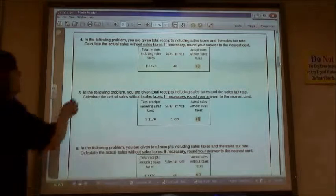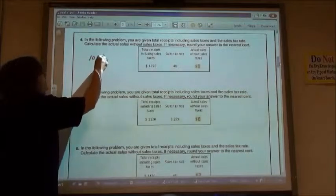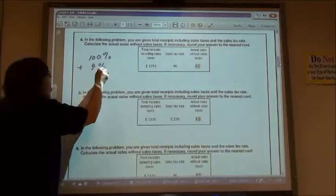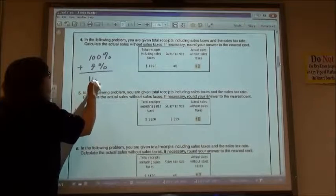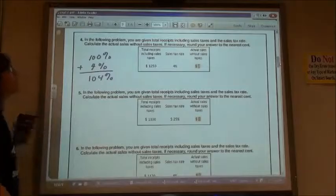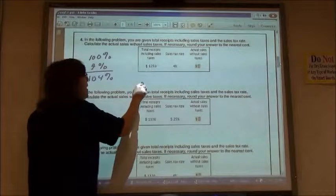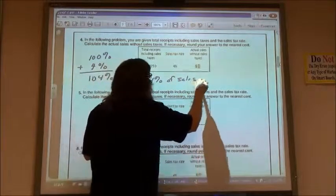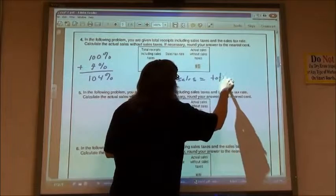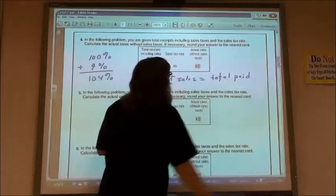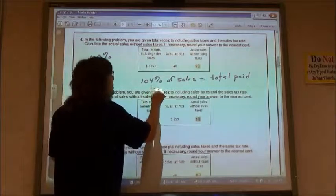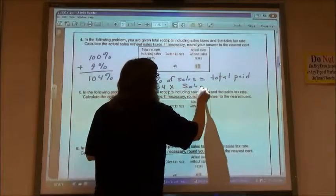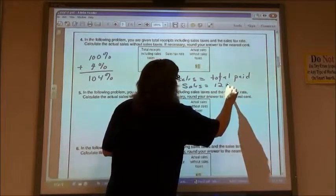So if I have the sales, that's 100% plus my sales tax is 4%. That means my sales tax plus my sales is 104%. So I would say 104% of my sales is equal to the total that I paid. And so I'm going to use 1.04 times the sales which I'm trying to find equals my $1,250.